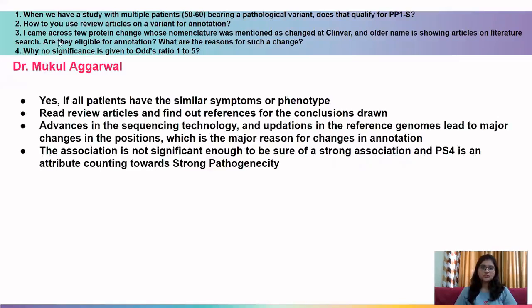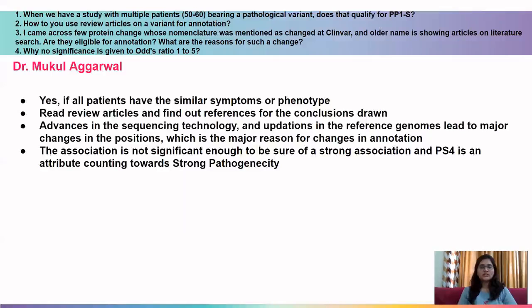The next question is by Dr. Mukul. First question: when we have a study with multiple patients carrying a pathological variant, does that qualify for PP1S? Yes — if multiple patients have similar symptoms or phenotype and they all have that variant, you can assign PP1S. Second question: how to use review articles for annotation? Read the review article, understand its conclusion, go back to the cited reference, read it in detail, and then decide whether to assign that particular ACMG attribute. The key is to go from review to the primary reference.